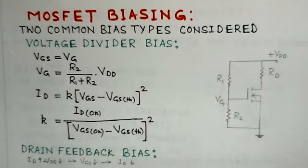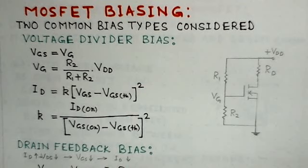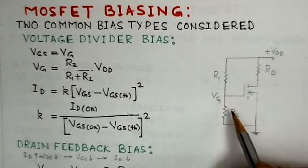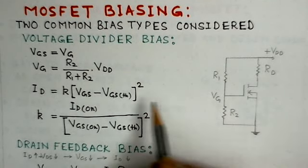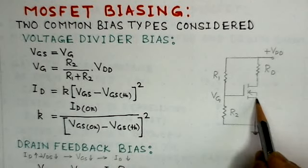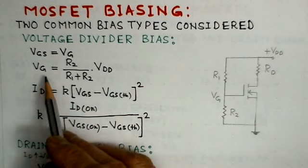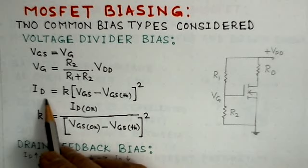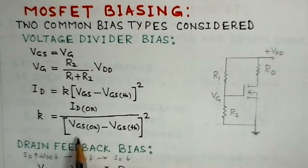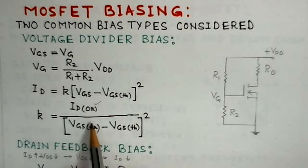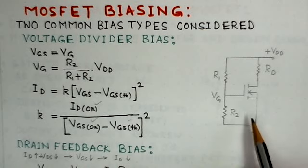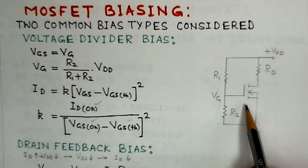Two common bias types are considered for MOSFET biasing. The first is voltage divider bias, the same arrangement used with BJTs. Here, VGS equals VG because the source is at ground potential, so VG equals VGS, and VG equals R2 over (R1 plus R2) times VDD. The drain current ID is given by K times (VGS minus VGS(threshold)) squared. The value of K is determined from datasheet values of ID(on), VGS(on), and VGS(threshold), allowing determination of ID and VDS.